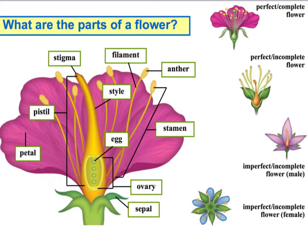For example, think of a wind flower. It does not have petals, but it has male and female structures and sepals. Imperfect flowers lack either the stamen or the pistils, so they're one or the other — essentially these flowers are either male or female, not both, as was the case with a complete flower.